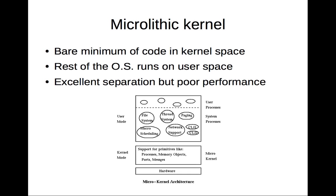In a microkernel, only a limited amount of code is placed in the kernel space and the rest of the OS runs in user space. In the user space, all the system processes are separated from one another, and there is also separation between user processes and system processes.